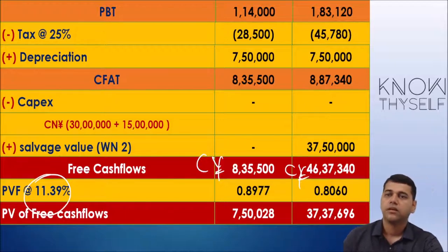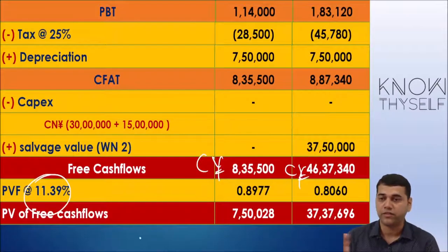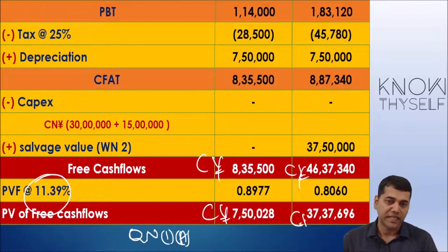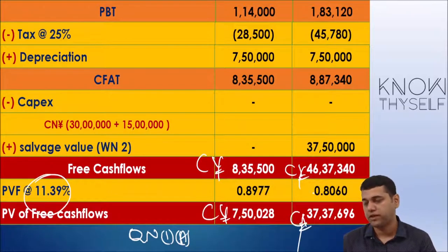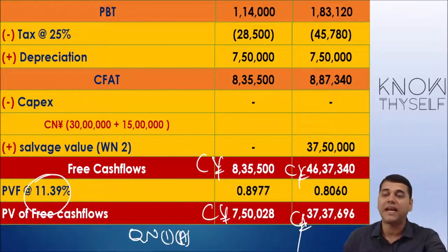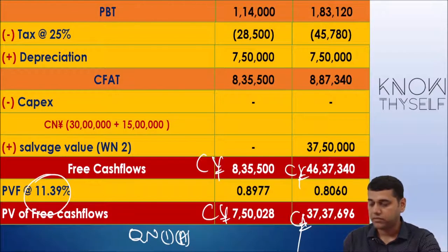Part 1A answer: Identify expected cash flows in China. The free cash flows in Chinese Yuan are the answer to the first part of the question. For Part 1B, NPV of the project: total cash inflows present value is approximately 44.87 lakhs versus outflow of 45 lakhs, giving a slightly negative NPV. Therefore, reject the project under the foreign currency approach.